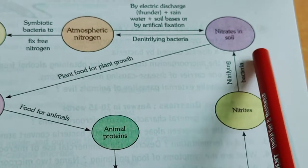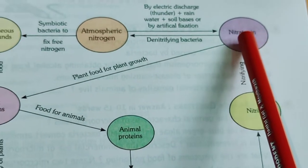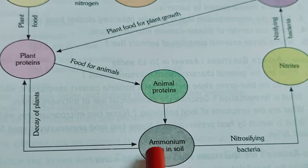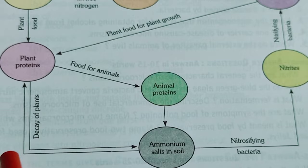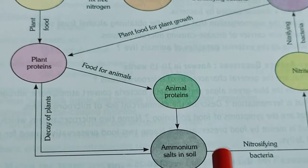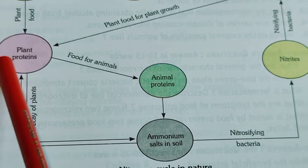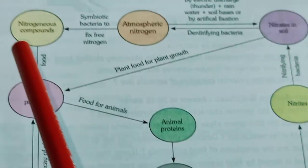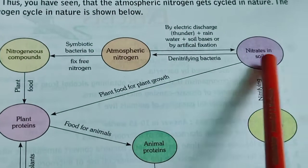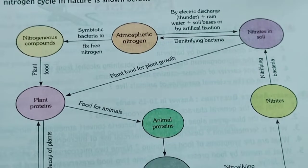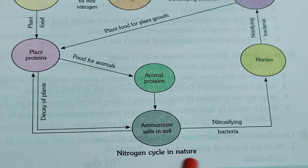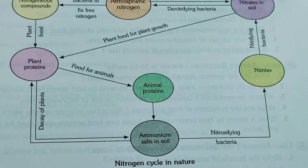The ammonium salts go through nitrites, then nitrates, and are again absorbed by the plants. Students are advised to draw this flow chart of the nitrogen cycle in nature.